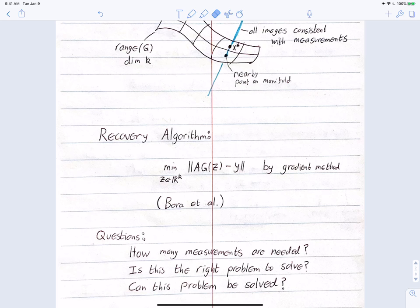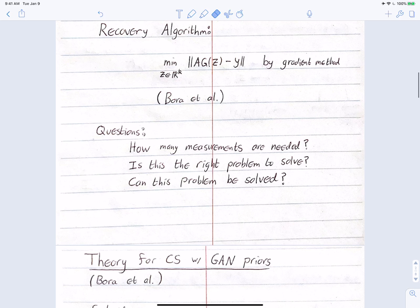This formulation raises several questions: how many measurements are needed to recover a signal of interest? Is this the right problem to solve — if you solve this minimization, do you get the answer you're looking for? Are you stable to noise? What if you're imaging a point not exactly in the range of g? Why are you stable to being off that range?